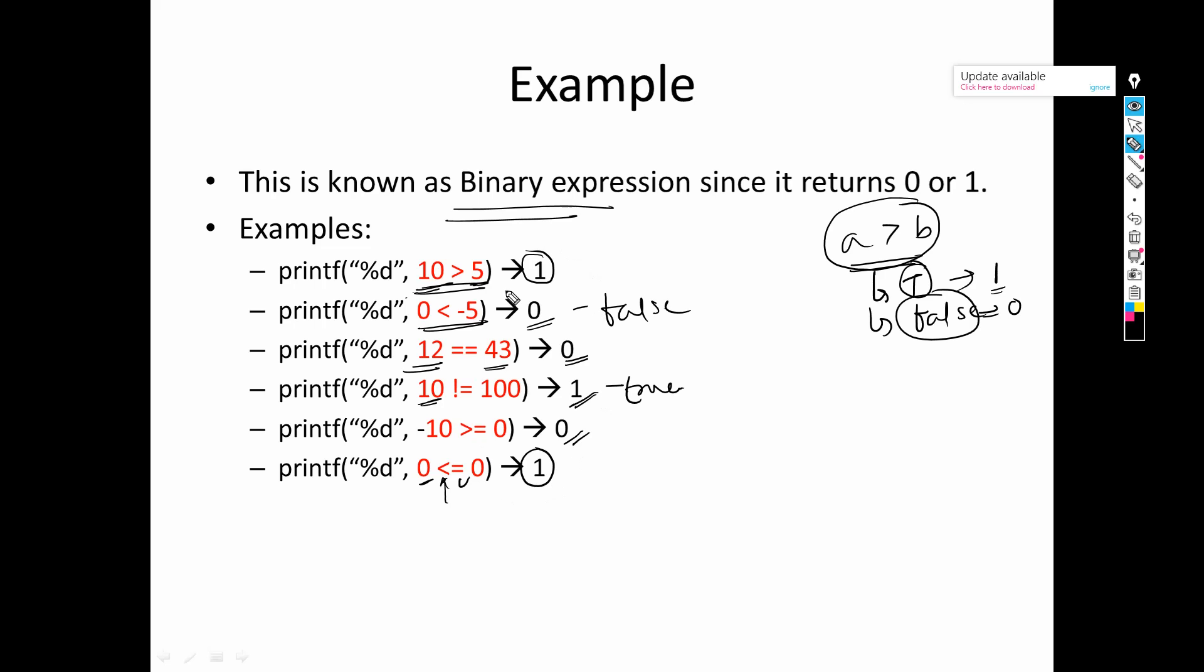So in all the cases you have seen that it either returns 1 or it returns 0. So we can say that this is a binary sort of expression. Binary expressions are to check the relation between two variables or values. So I hope you understood. Thank you for watching the video.